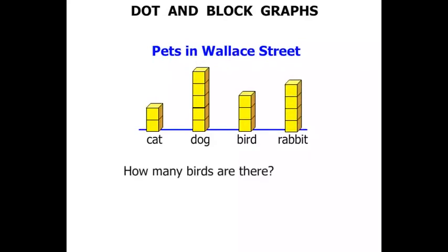Now the first question: How many birds are there? Well, quite simple — we look at bird and we count the blocks: 1, 2, 3. So 3 is our answer.